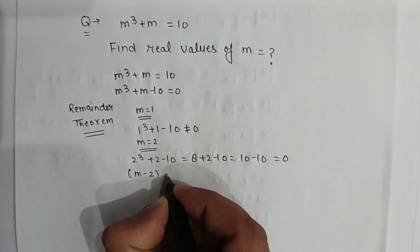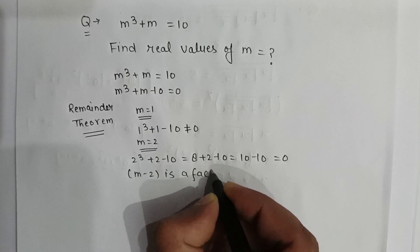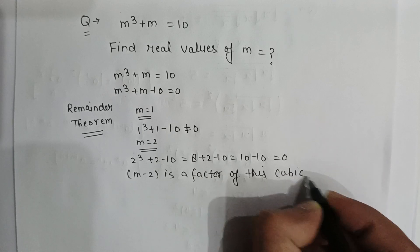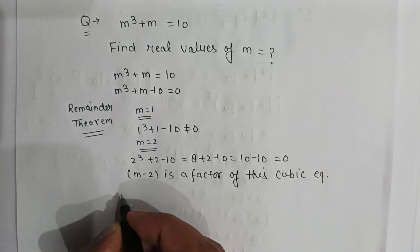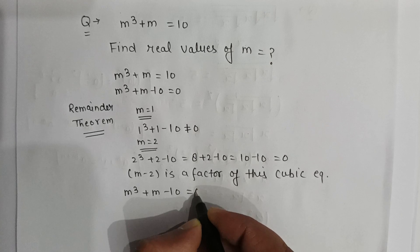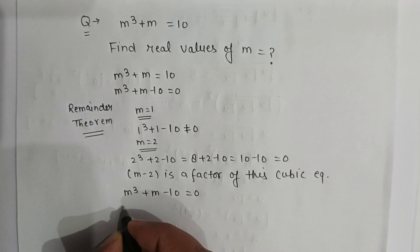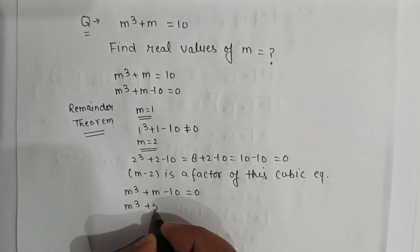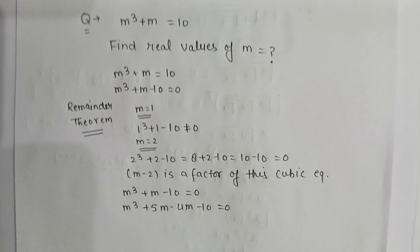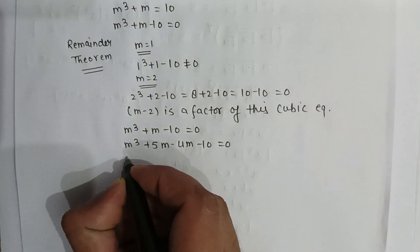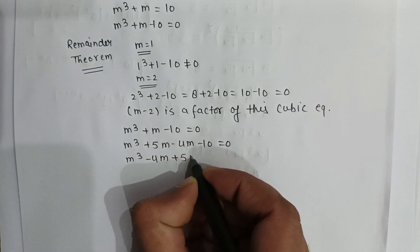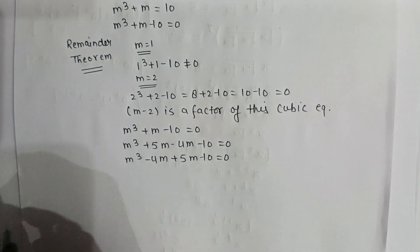So m minus 2 is a factor of this cubic equation. We can rewrite m to the power 3 plus m minus 10 as m to the power 3 plus 5m minus 4m minus 10 equal to 0, which gives m to the power 3 minus 4m plus 5m minus 10 equal to 0.